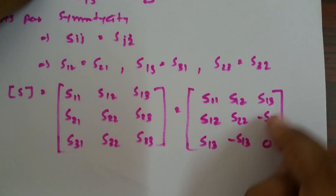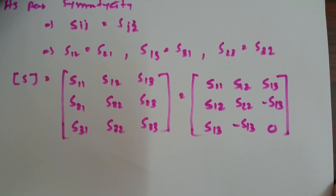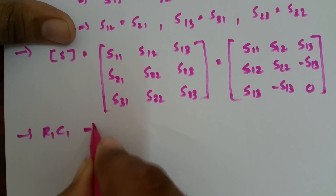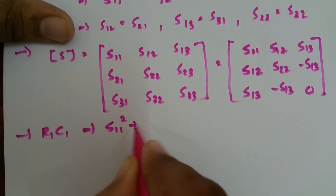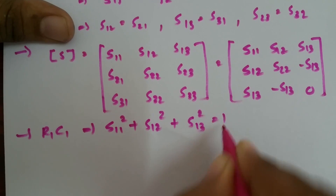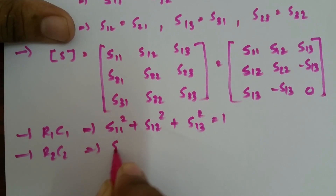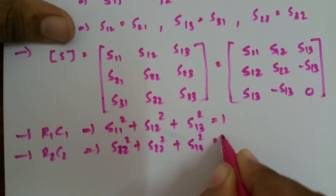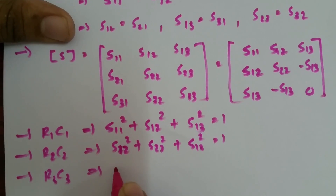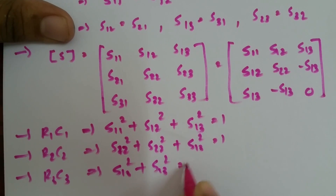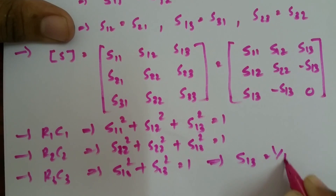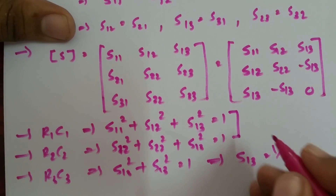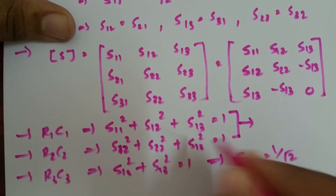To calculate values, we multiply rows and columns. From operation R1·C1: S11² + S12² + S13² = 1. From R3·C3: S13² + S13² = 1, which gives 2·S13² = 1, so S13 = 1/√2. Substituting S13 = 1/√2 into the first equation gives S11² + S12² = 1/2.